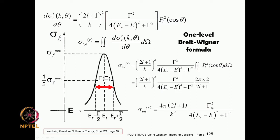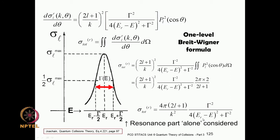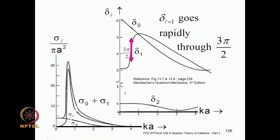The result contains Gamma²/4 divided by (E_r − E)² + Gamma²/4. Sometimes both numerator and denominator are divided by four, giving (Gamma/2)² in familiar form. This is the Breit-Wigner formula — considering only the pure resonance part, ignoring the residual background contribution. This formula is known as the Breit-Wigner one-level formula.